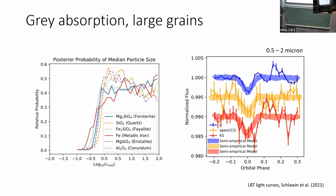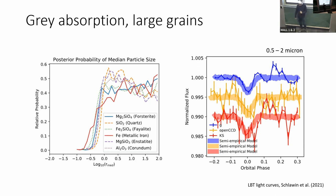More evidence that these things are dust grains: before I was showing Kepler broadband white light with no spectral information. What I'm showing here on the right is ground-based data from the Large Binocular Telescope at a few different wavelengths between 0.5 and 2 microns. This data is super noisy, but you can see that essentially the depth of this transit is more or less constant — it doesn't vary very strongly with wavelength. If it were a spectral line, you wouldn't see this.